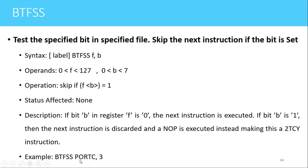An example is BTFSS PORTC comma 3. The meaning is that if bit number 3 of the PORTC register is set or equal to 1, then the next instruction written after this will be skipped and further instructions will be executed. However, if this bit is 0 or clear, then the condition is false and the next instruction will be executed normally.